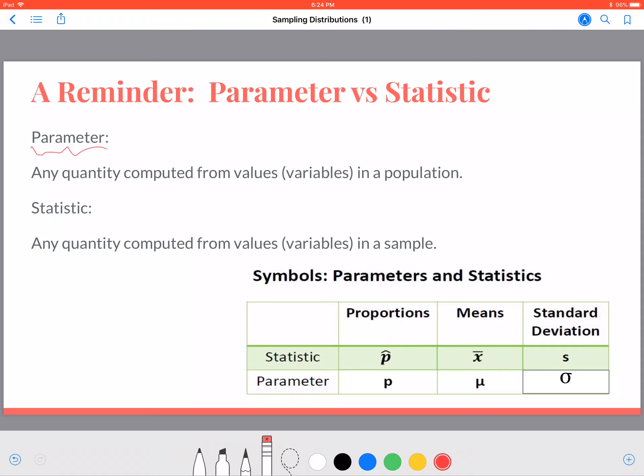Now we've had all of these symbols before, and remember we have different symbols that denote a statistic from a parameter. The one that's going to be new is proportions with what we call P-hat and then P for the parameter. We will talk through those tomorrow. Thank you.